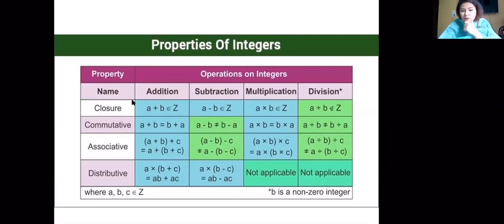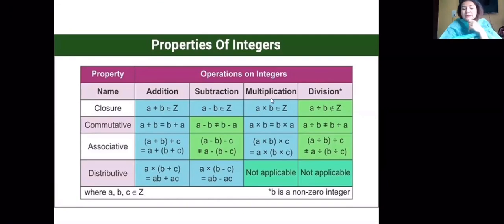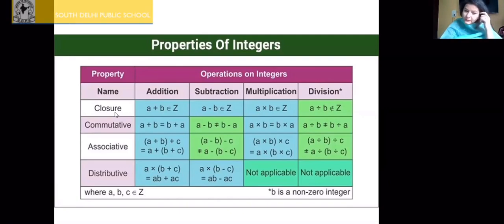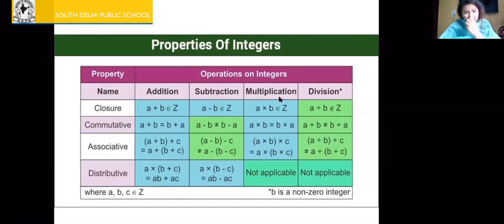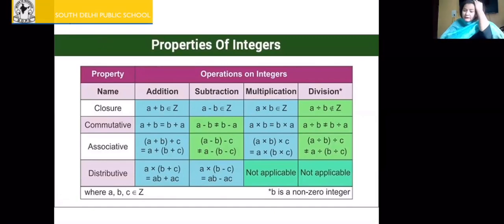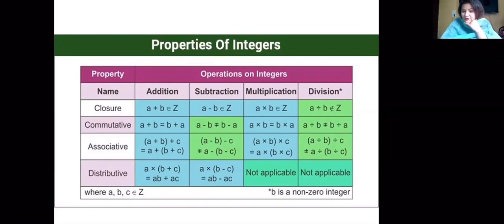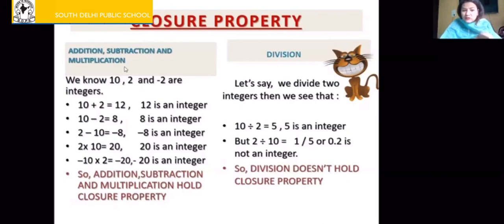These properties are important. We are going to verify the properties for addition, subtraction, multiplication, and division — all four operators. The first property is closure. Closure means you take any two integers, add them, subtract them, or multiply them, and check if the answer is an integer or not. If the answer is also an integer, then we say we have closure property. For division, we don't have closure property. Next are commutative, associative, and distributive properties.